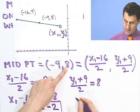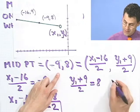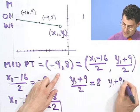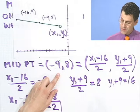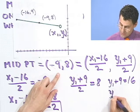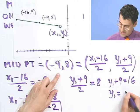So if I cross multiply or multiply everything through by 2, I'd see that y1 plus 9 has to equal 16. If I now subtract the 9 over, I see that y1 has to equal, I guess it would be 7.